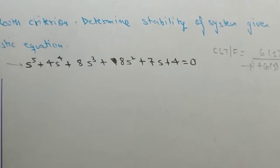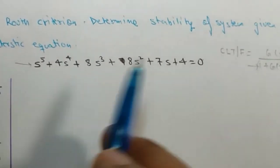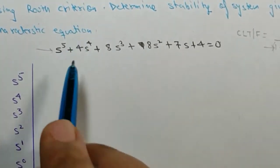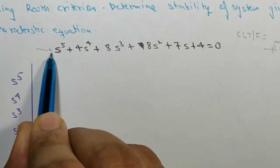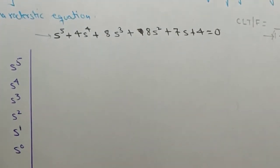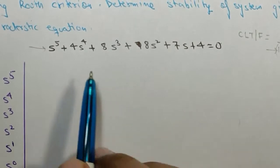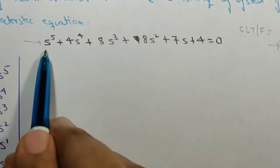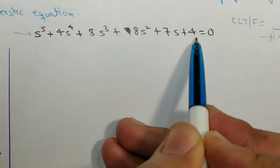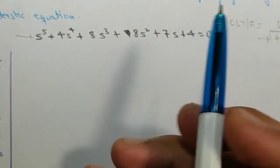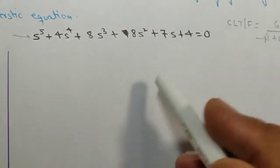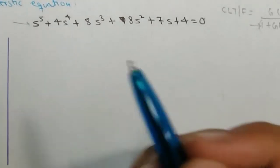Before applying the Routh array there are two necessary conditions to check for stability. First, the coefficients of all powers of s should be the same sign. Second, all powers of s should be present — if s^5 is the highest power, then all powers from s^5 down to s^0 must be present. These conditions don't confirm stability, they just tell us the system is eligible to be stable.